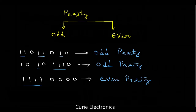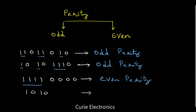The last example: 1 0 1 0. What is the parity? This is a nibble — nibble means 4 bits. So this is also even parity.